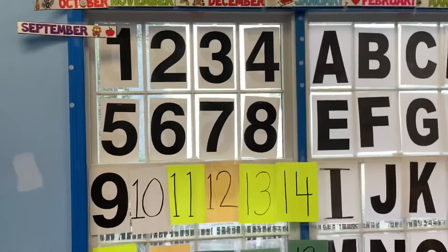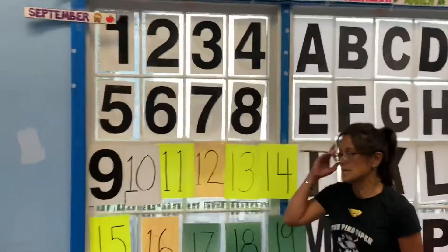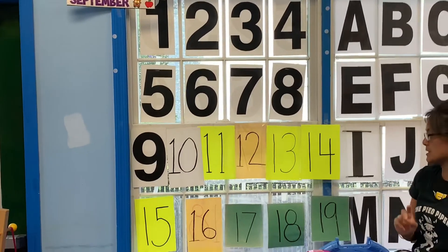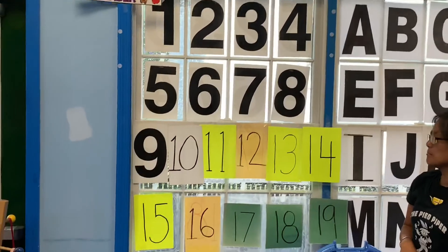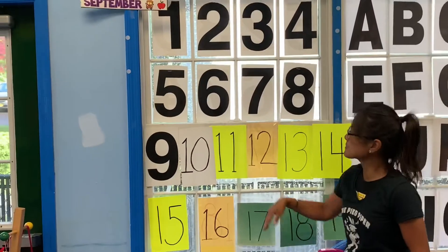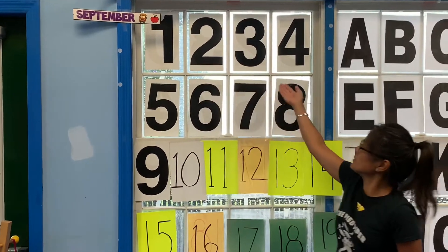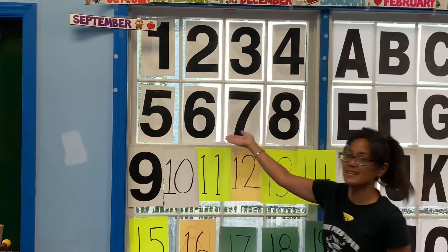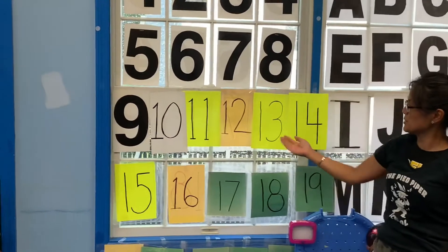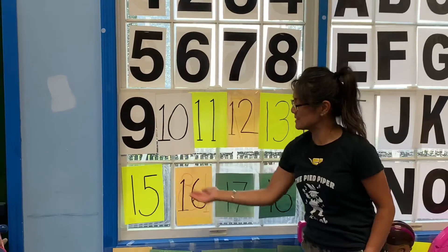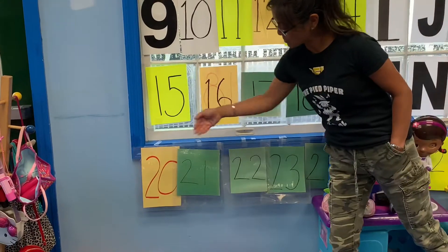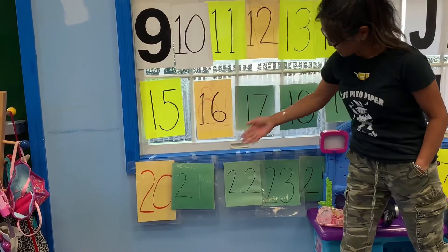We reviewed this week. We talked about teen numbers. Teen numbers all begin with the number 1, and there are 2 numbers in every teen number. 1, 2, 3, 4, 5, 6, 7, 8, 9, 10, 11, 12, 13, 14, 15, 16, 17, 18, 19, 20, 21, 22, 23.